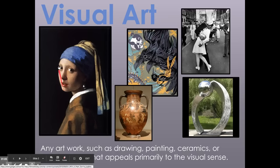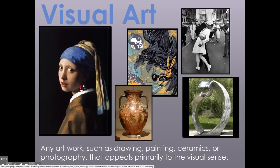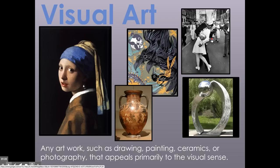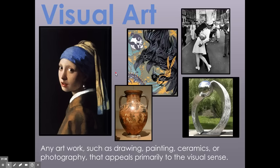Here we have a very famous painting by Johannes Vermeer. This is called The Girl with a Pearl Earring. This is a painting. Here we have a print, some crows here. Here we have photography, a very famous photograph of a sailor kissing his nurse girlfriend or something, and an abstract metallic sculpture. And we have an ancient urn, seems to be Greek in origin. But all of these are visual — they're part of what visual arts are.